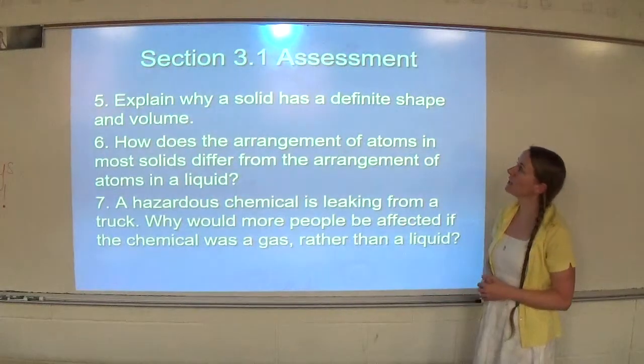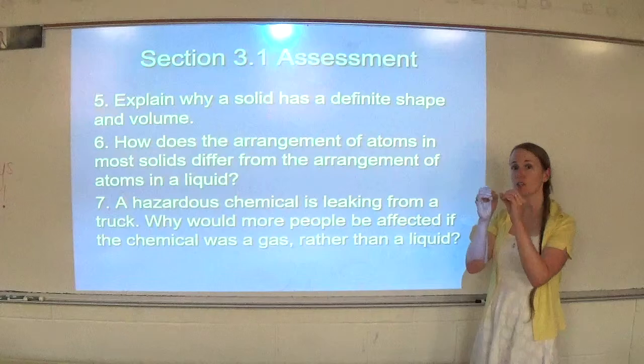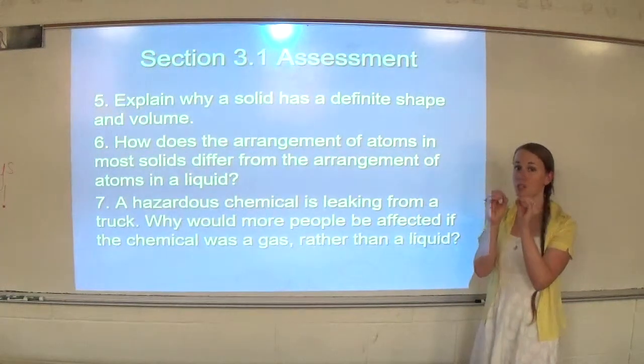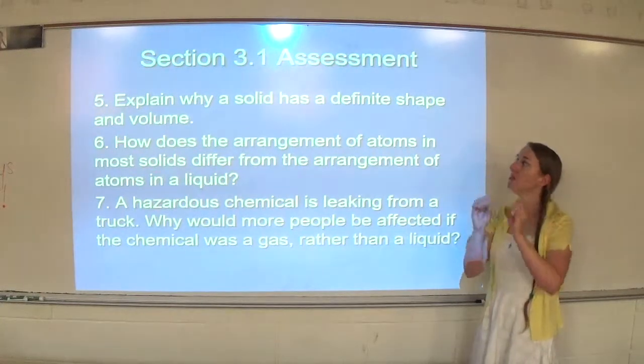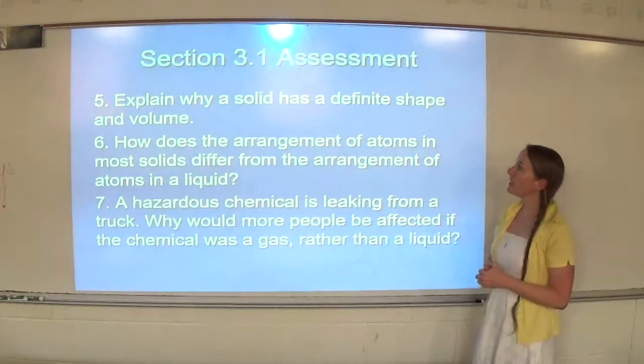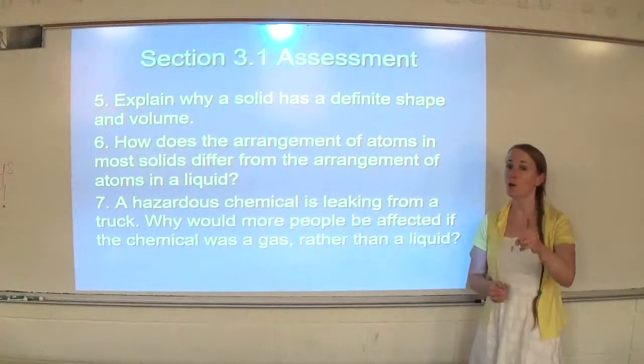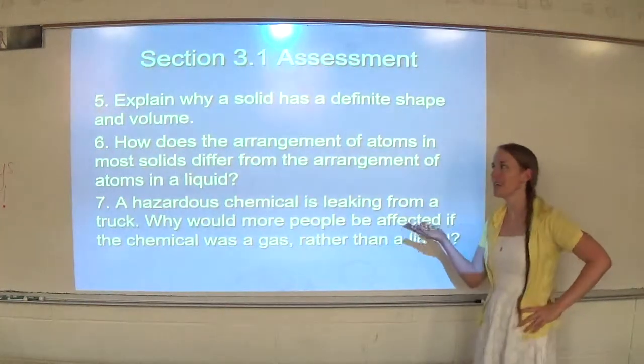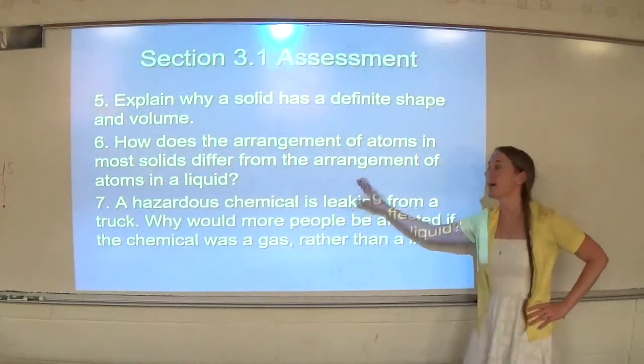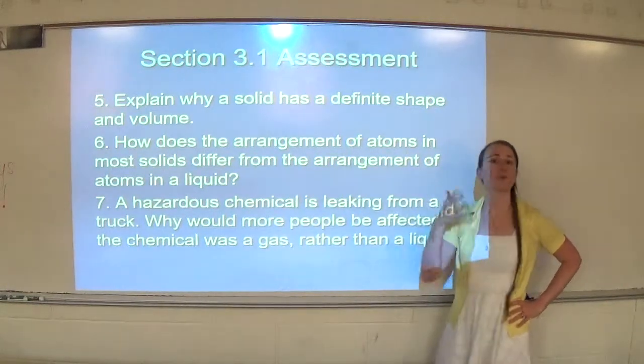Number five, explain why a solid has a definite shape and volume. Solids, the particles are only allowed to vibrate in their fixed locations. So it can't change shape or volume because the particles are in fixed positions. They're still moving. It's vibration. But it can't take the shape or volume of the container. Number six, how does the arrangement of atoms in most solids differ from the arrangement of atoms in a liquid? They're both close together. I know you're probably like, how many times are you going to say that? How many times am I going to mark it wrong in my class? They're both really close together. However, a solid's particles are orderly, whereas a liquid's particles are random.